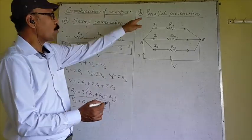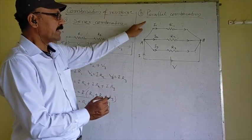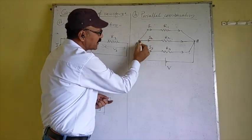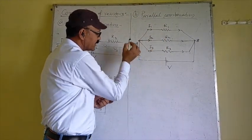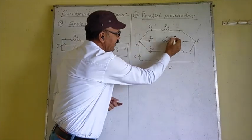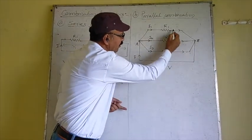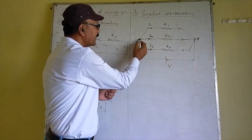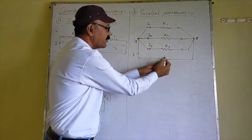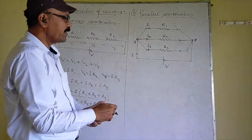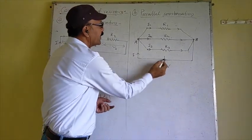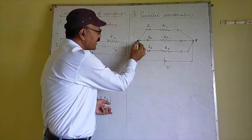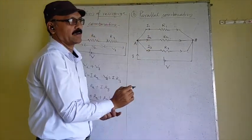Next is the Parallel Combination. In the Parallel Combination, the first end of all three resistors is connected to a single point, and the second end of all three resistors is connected to another point. These two points are connected with the positive and negative terminals of the cell. Current I flows from the positive terminal, and at point A it divides into three parts.